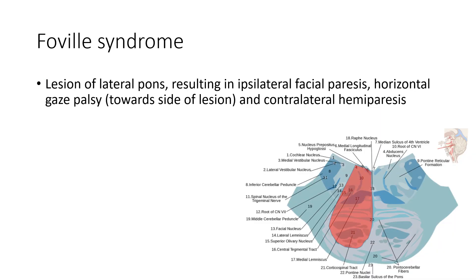Next is Foville syndrome. In this case there is a lesion of the lateral pons resulting in ipsilateral facial paralysis, horizontal gaze palsy towards the side of the lesion, and contralateral hemiparesis.